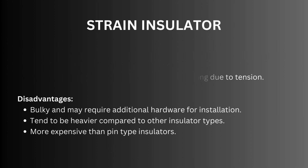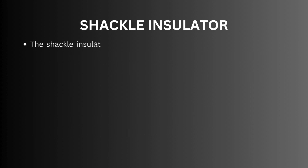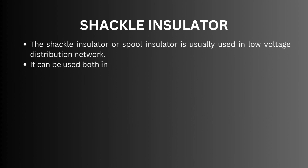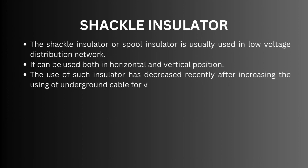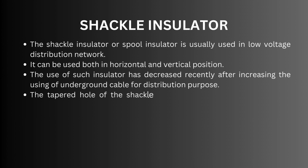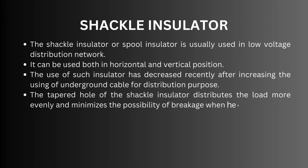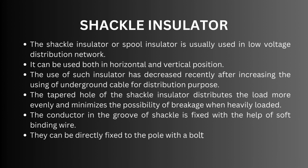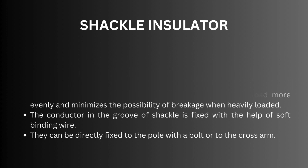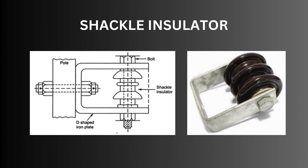Shackle insulator: the shackle insulator or spool insulator is usually used in low voltage distribution networks. It can be used both in horizontal and vertical positions. The use of such insulators has decreased recently due to increased use of underground cables for distribution. The tapered hole of the shackle insulator distributes the load more evenly and minimizes the possibility of breakage when heavily loaded. The conductor in the groove of the shackle is fixed with the help of soft binding wire, and they can be directly fixed to the pole with a bolt or to the cross arm. The figure illustrates a shackle type insulator.